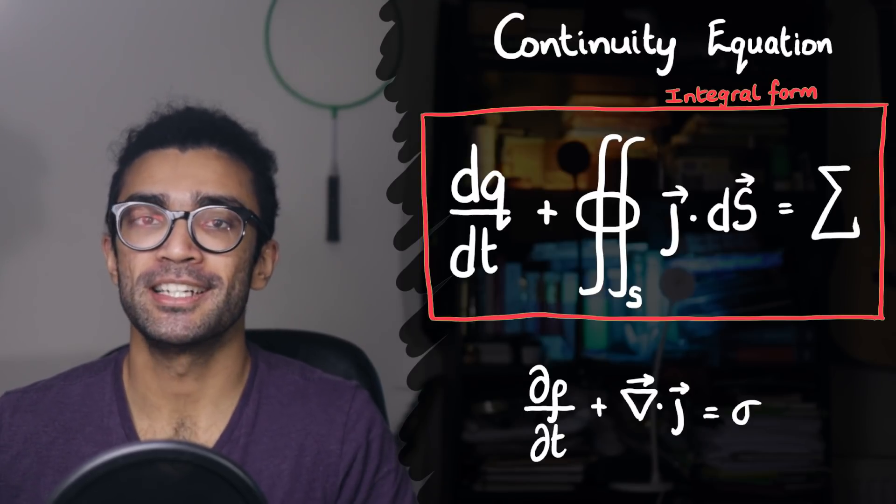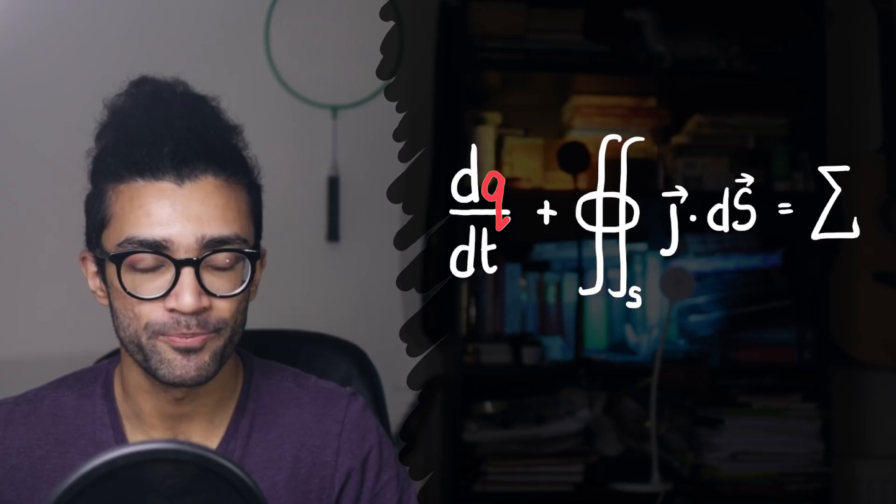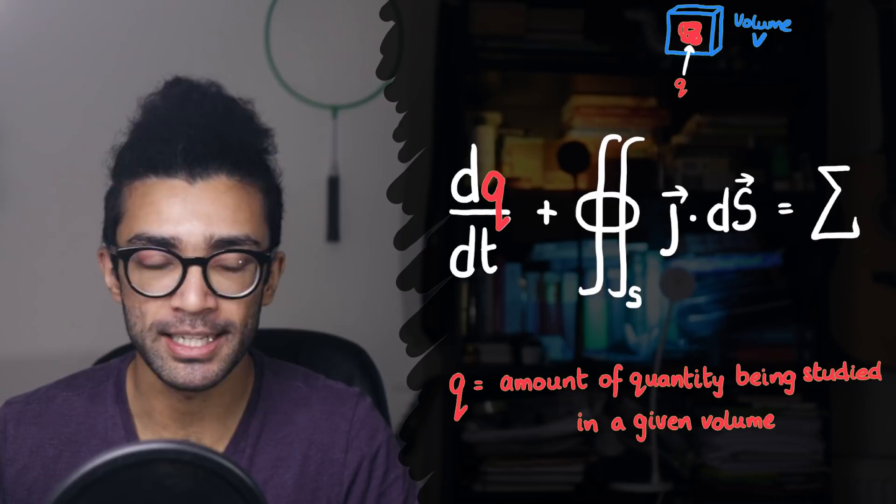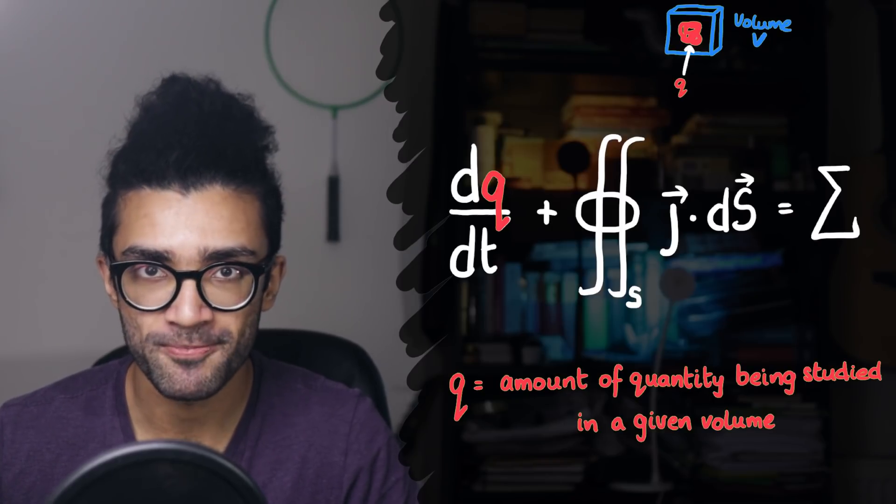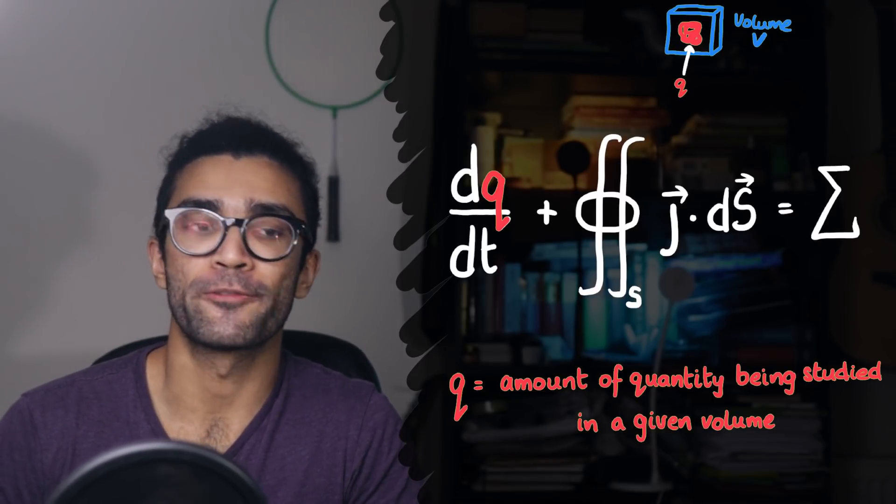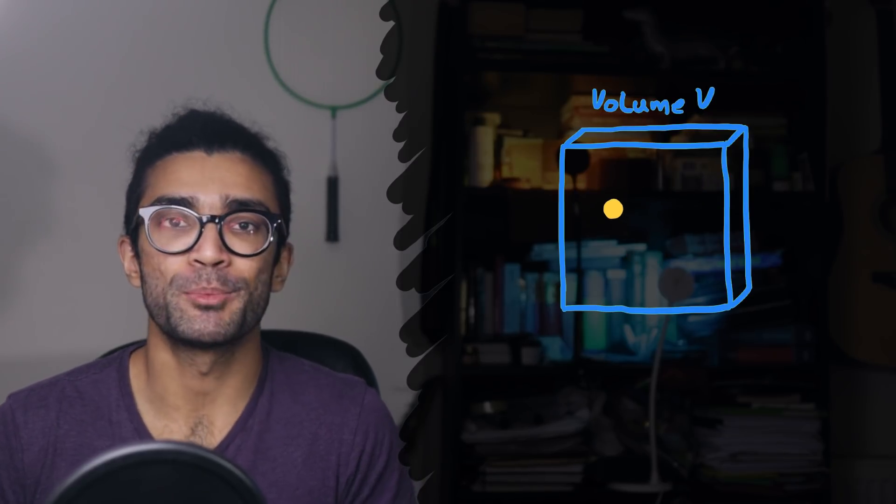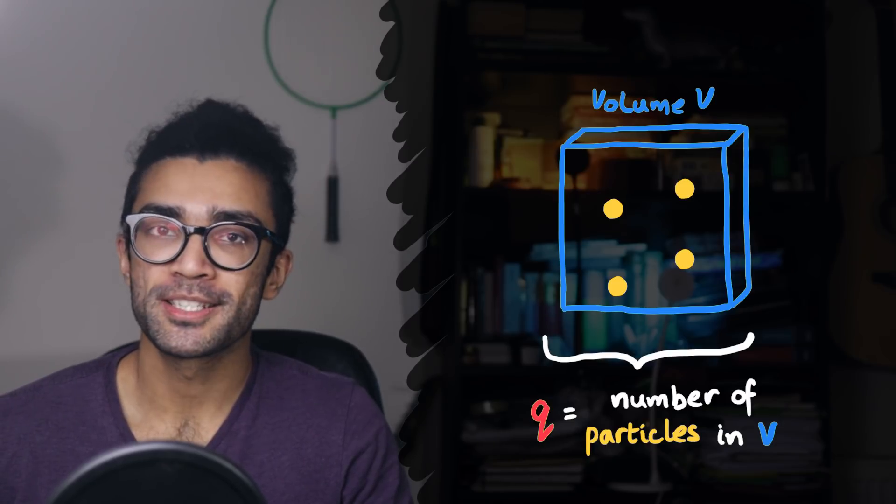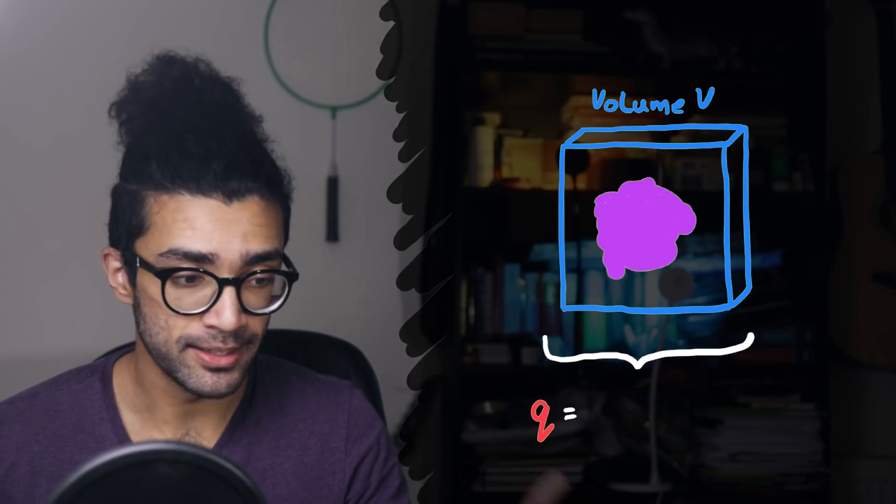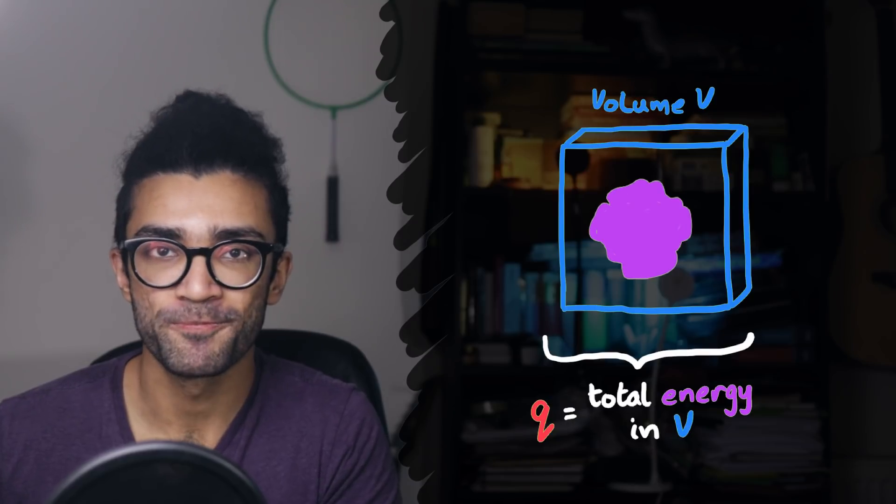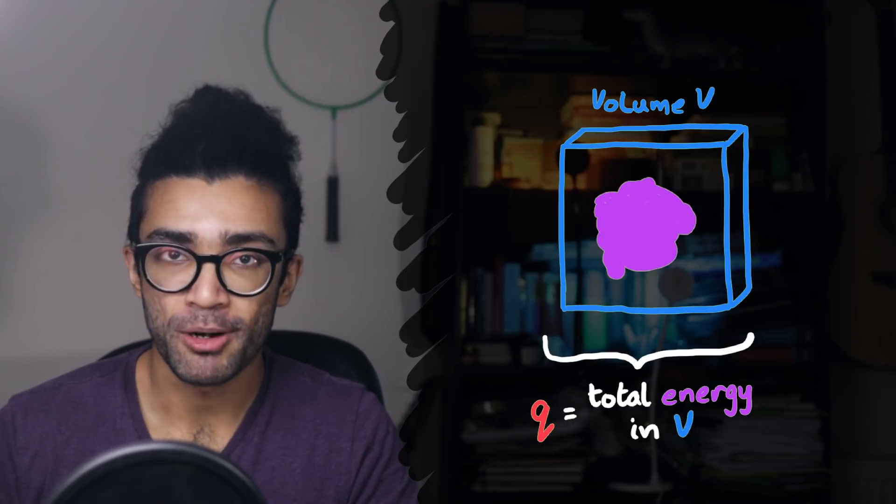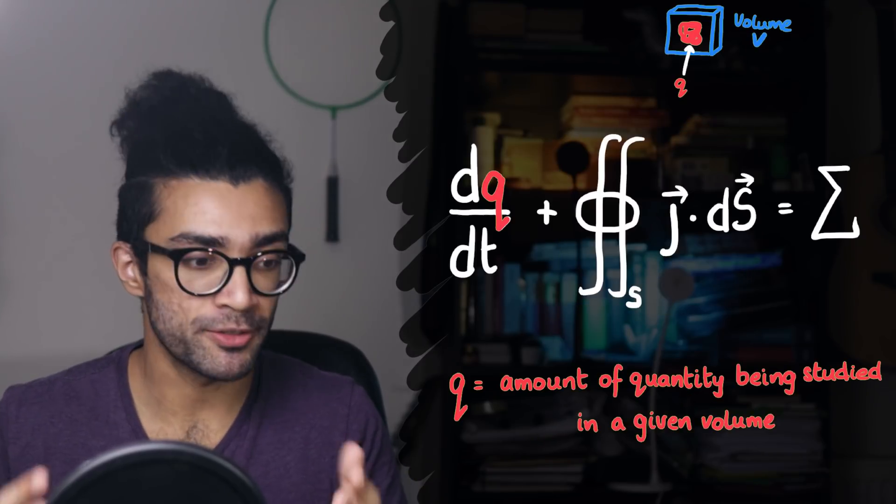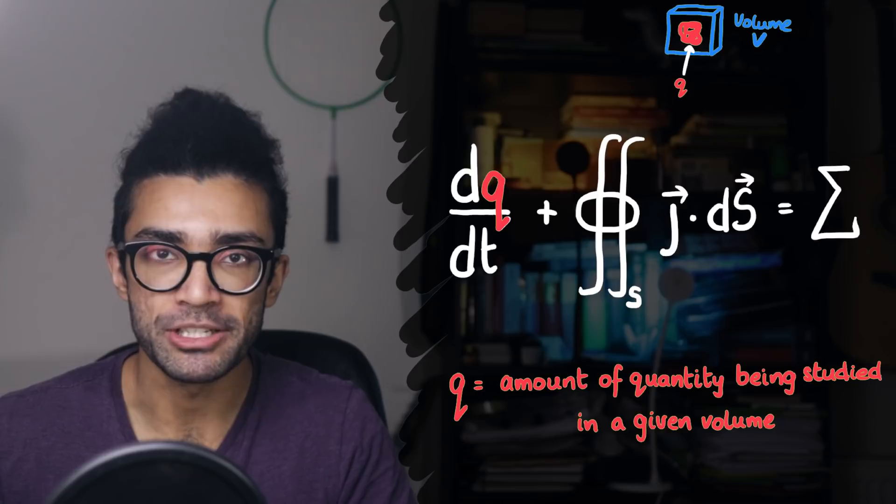Let's begin by first understanding what Q means in this equation. Q simply represents the amount of a particular quantity that we happen to be studying in a given region of space. For example, if we want to study the flow of particles through some region, then Q is simply the number of those particles in that region of space. If we're trying to understand the flow of energy, then Q is the amount of energy in that region of space. And there are lots of other quantities that Q could represent, which we will see later, but the point is that Q represents the amount of stuff that we happen to be studying in a given region.